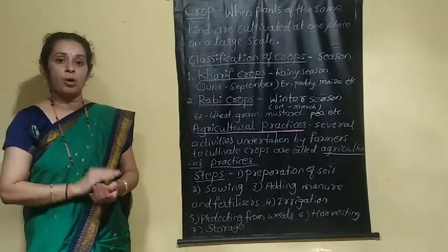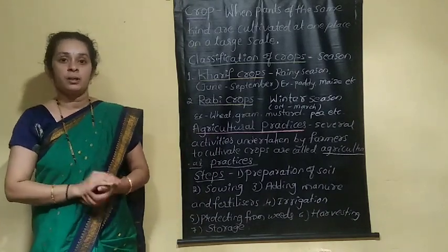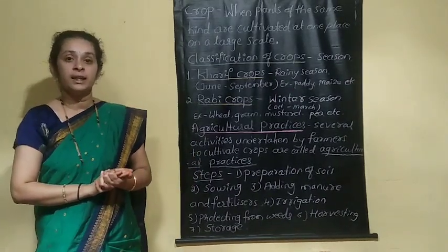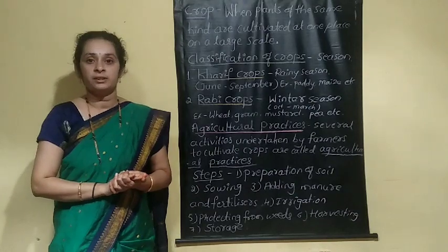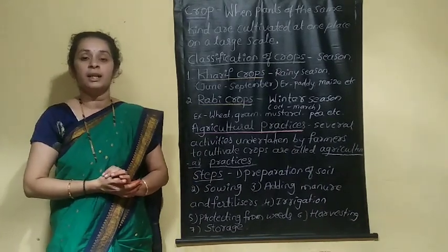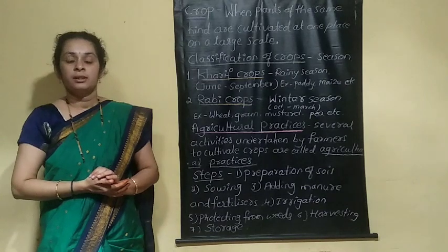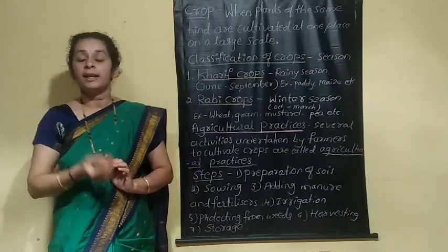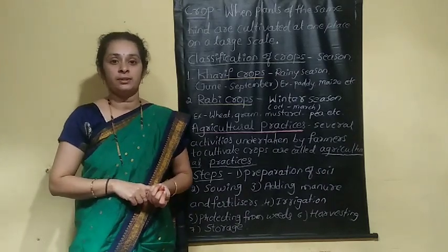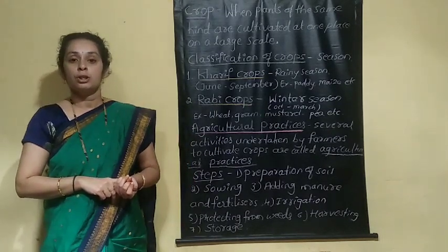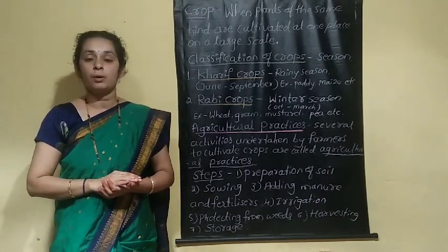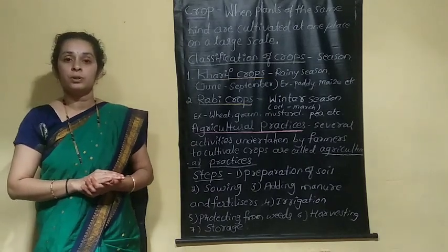The process of turning and loosening of soil is called tilling or plowing. This can be done by using agricultural tools like plough, hoe, and cultivator. In the next class, we will discuss all these agricultural tools in detail.